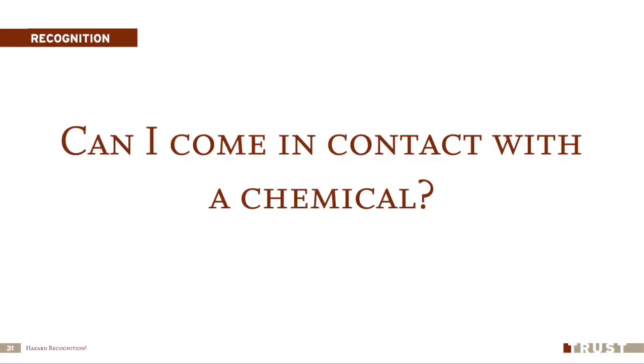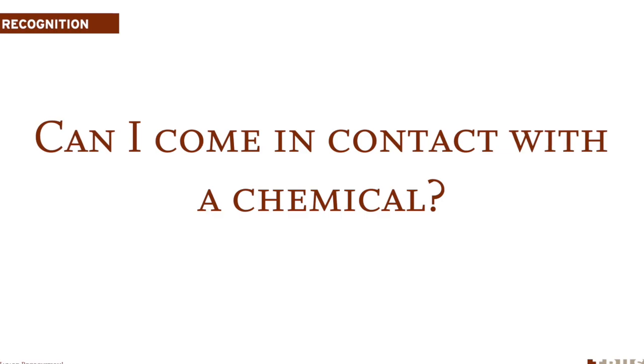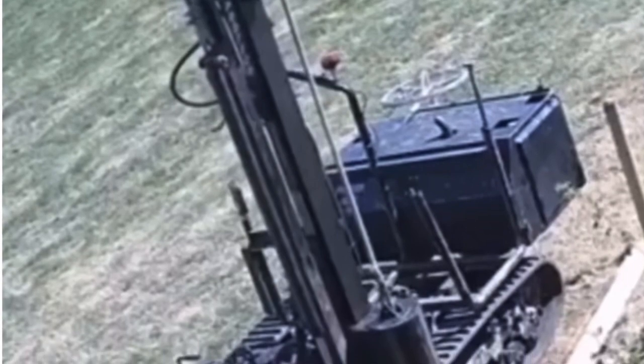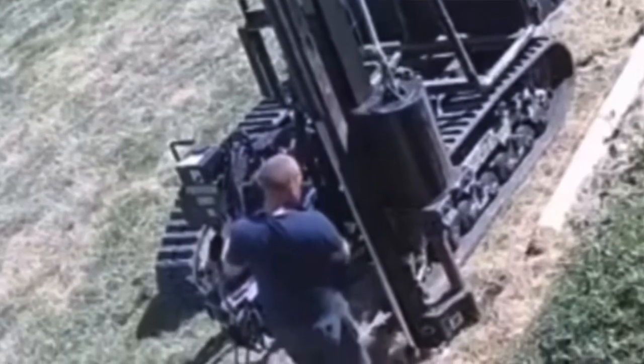Can I come in contact with a chemical? Chemicals are all around us. We have the potential to come into contact with many chemicals in a given workday — whether you work in an office or out in a water treatment plant or sewer treatment plant, we all have the potential to come in contact with a chemical that can hurt us. Identify what those are. How do I know what the hazards are? We can look at our SDS sheets — safety data sheets — and understand what the risk and hazard is. This person unfortunately didn't look close enough, didn't identify underground utilities, and hit a gas line. Fortunately it didn't ignite and he was able to get away, but that was a pretty exciting explosion.